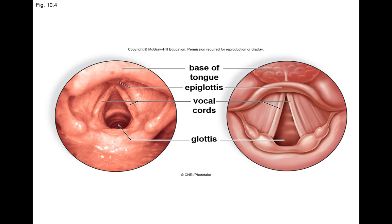Some people can get inflammation of the vocal cords, which we call laryngitis. Because the vocal cords are located in the larynx, it's an inflammation of the vocal cords. People with laryngitis need to drink lots of fluids and rest their voice. Whispering is the worst thing for laryngitis because it causes the vocal cords to work and stretch a little tighter, which is harder on the vocal cords when they need to heal.